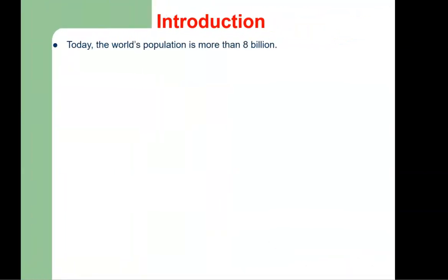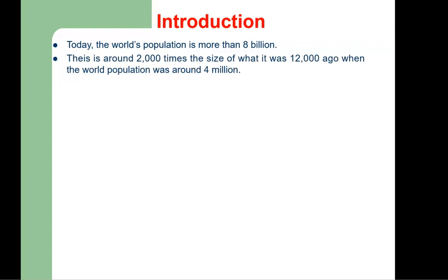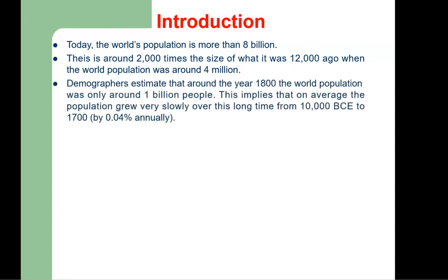Today the world's population is around 8 billion, which is 2,000 times larger than what it was some 12,000 years ago. At that time the world's population was about 4 million. Demographers estimate that around the year 1800 the world population was only about 1 billion people, which implies that on average the population grew very slowly over this long period from 10,000 BCE to 1700, with a growth rate of about 0.04% annually.